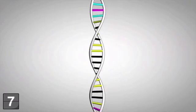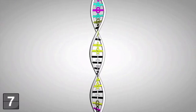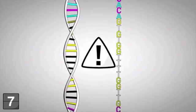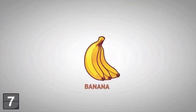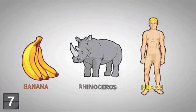The particular order of A's, T's, G's, and C's is extremely important as it determines whether you are a banana, rhinoceros, or a human.